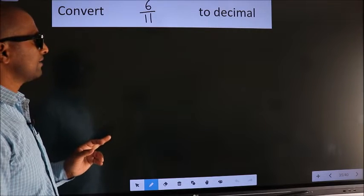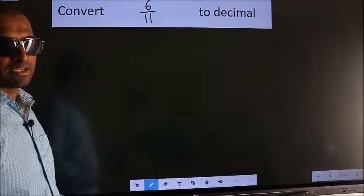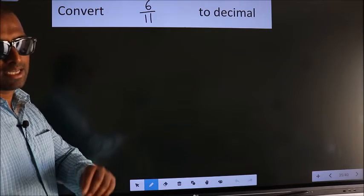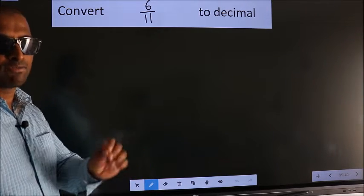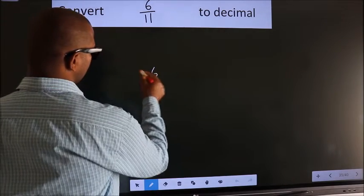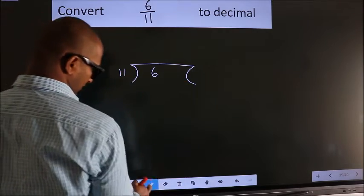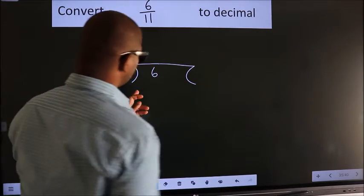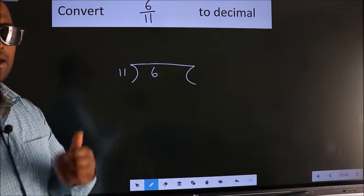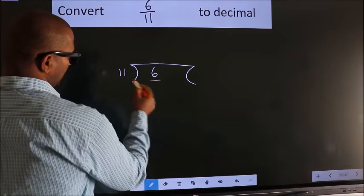To convert 6/11 to decimal, we have to divide. We should frame it in this way: 6 here, 11 here. This is your step 1.